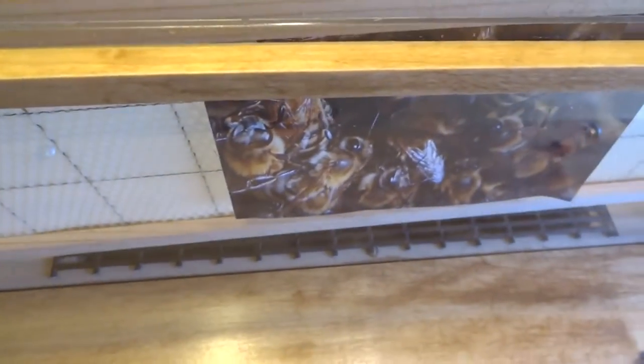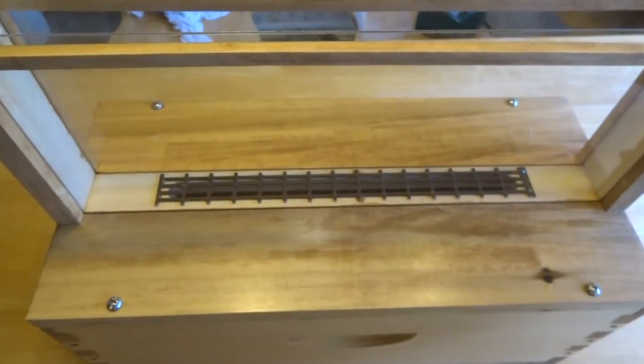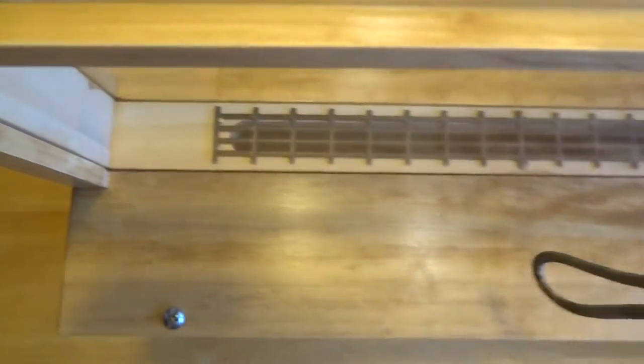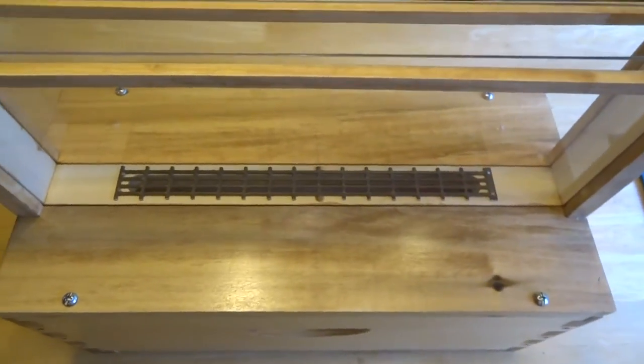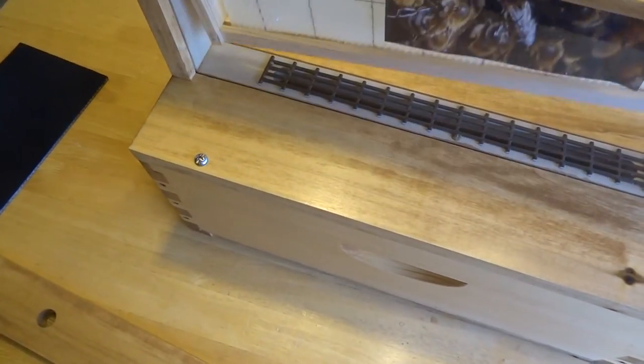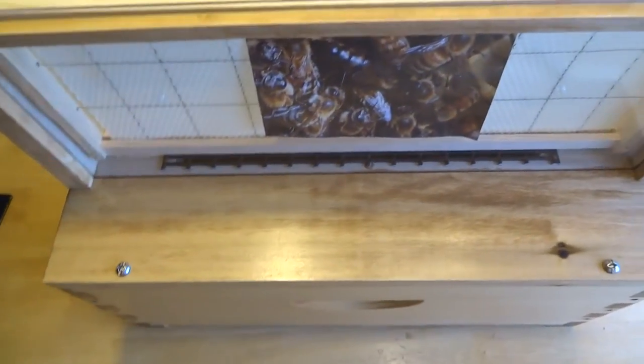There's two plexiglass windows which are custom fit too. So this is what it looks like on the inside. There's your queen excluder just tacked down, and the plexiglass is also removable. I'll show you the inside of the nuke in a second.